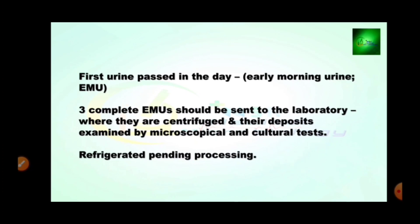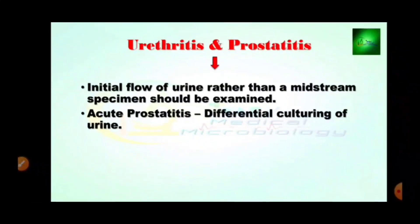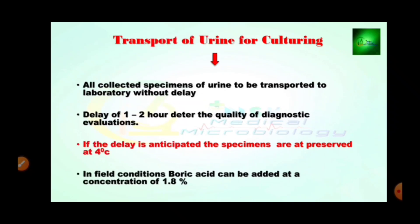The first urine passed in the day — early morning urine (EMU) — three complete EMUs should be sent to the laboratory where they are centrifuged and their deposits examined by microscopy and culture. For urethritis, the initial flow of urine rather than a midstream specimen should be examined. All collected specimens of urine must be transported to the laboratory without delay — a delay of one to two hours affects the quality of diagnostic evaluation. If delay is anticipated, specimens are preserved at 4°C (average 2-8°C). In field conditions, boric acid can be added at a concentration of 1.8%.